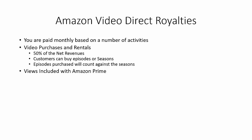Some of those views are going to be from people who have subscriptions to Amazon Prime, and there are going to be different tiers of activity based on aggregate hours streamed. Every year Amazon will determine how many hours people are streaming your videos, and that'll put you on a certain tier to be paid more or less. The more hours streamed, the higher your rate of pay.